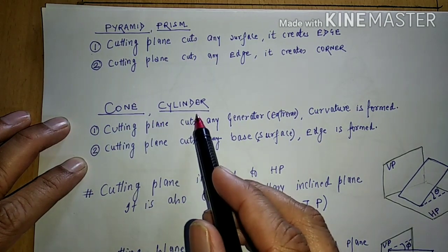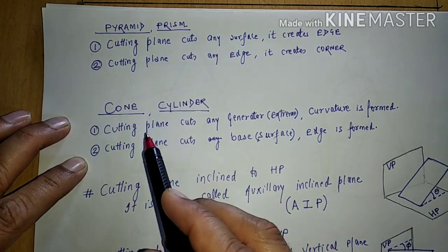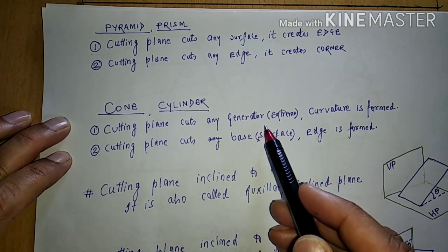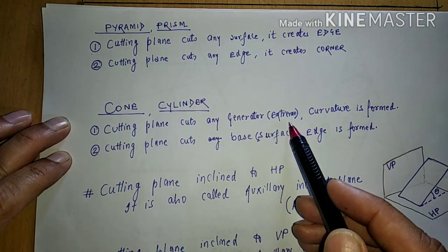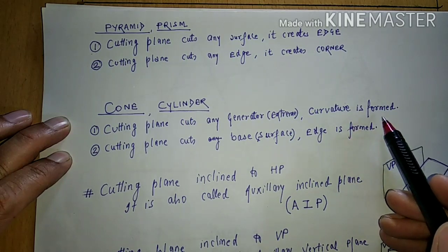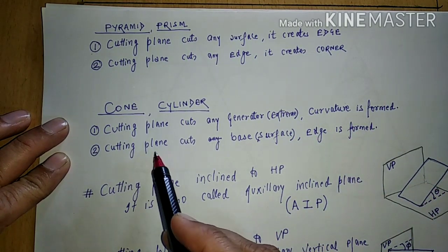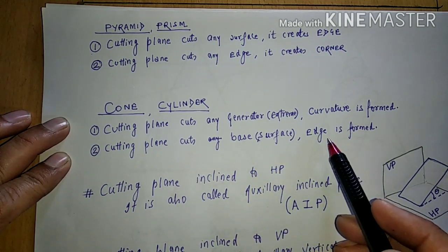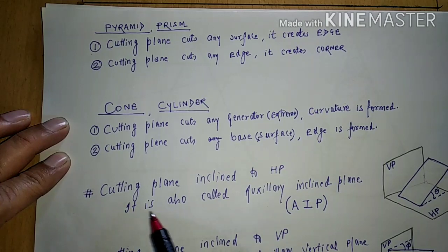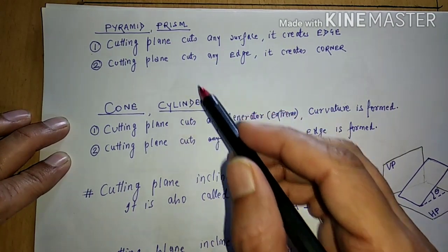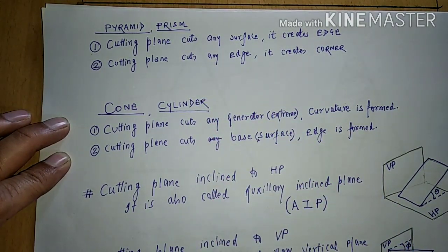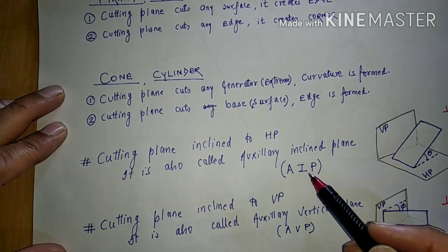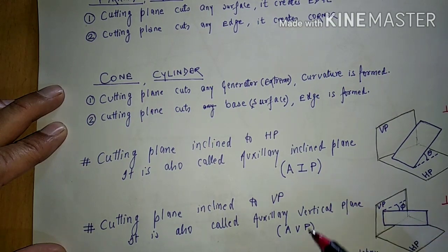Similarly, for cone and cylinder, both are made up of a curvature. If this cutting plane cuts any base or surface, an edge is formed. Remember this point, and also the representation of the center line, cutting plane line, and the important notation AIP and AVP.